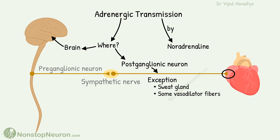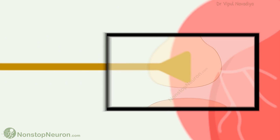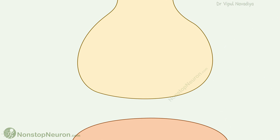Now let's look at the steps involved in adrenergic transmission. We go to the terminal of a postganglionic sympathetic neuron. This is the nerve terminal of the postganglionic neuron, and this is the post-synaptic membrane from the effector organ — for example, the heart.